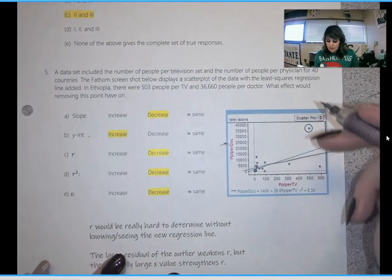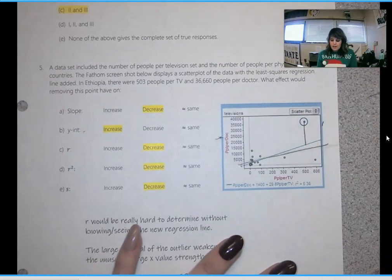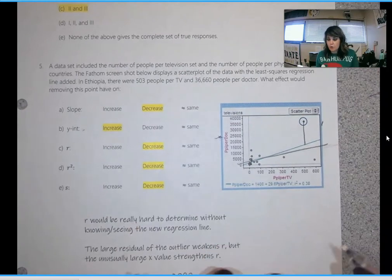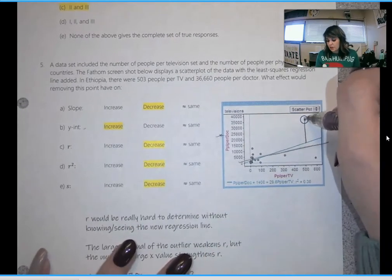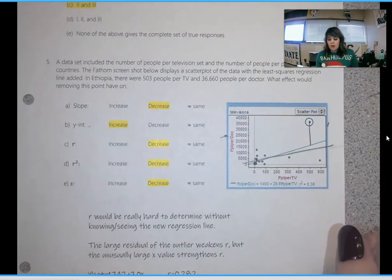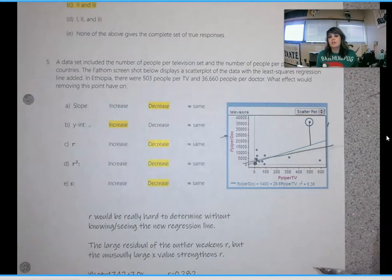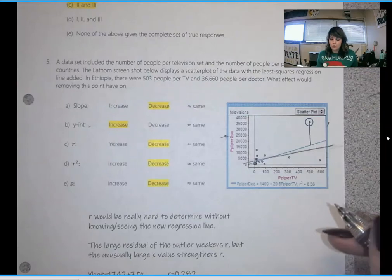Then the other one that I felt really good about was S. I felt like S would decrease for sure because this point is so far away from the regression line. But r and r squared really did it to me. r and r squared is what caused me to want to find the data set and really figure out what happened.